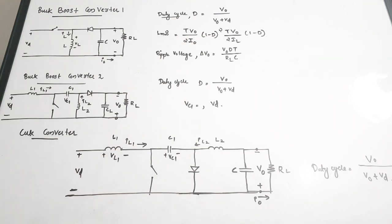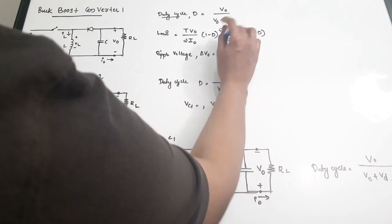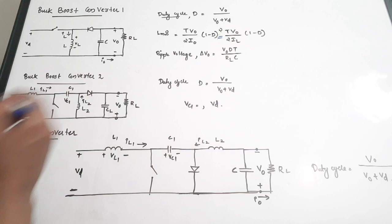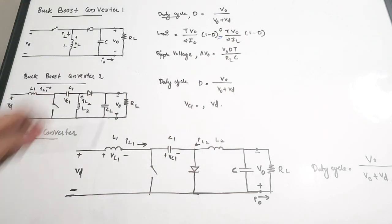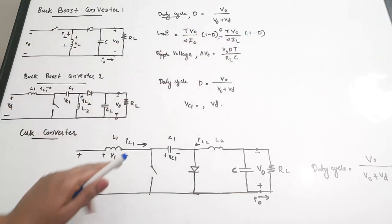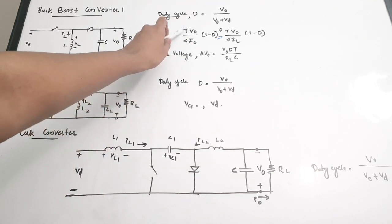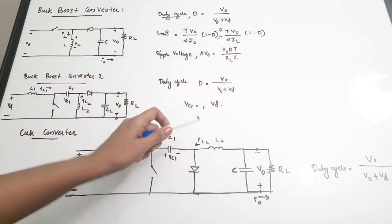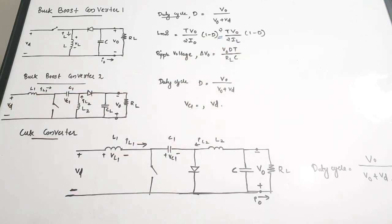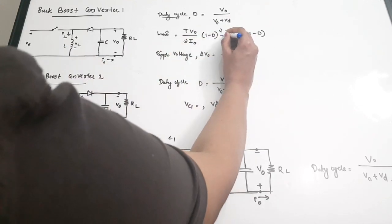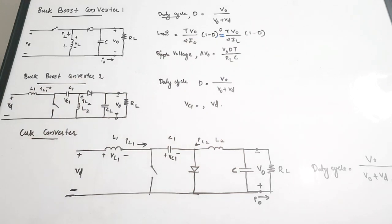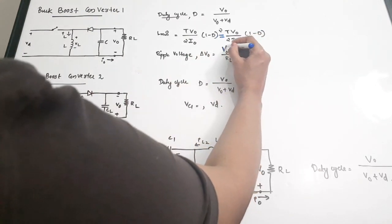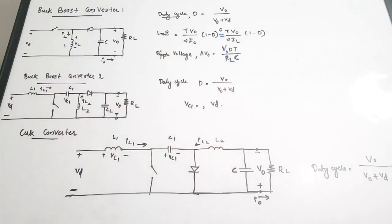For buck-boost converter 1, the duty cycle is: D = Vout / (Vout + Vd). The minimum inductance is: L_min = T × Vout / (2 × Iout × (1 − D)²), which can also be written as T × V0 / (2 × IL × (1 − D)). The ripple voltage is: ΔVout = Vout × D × T / (RL × C).